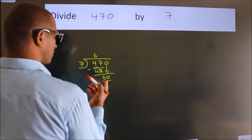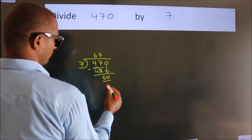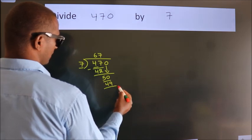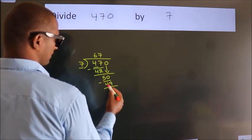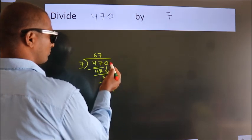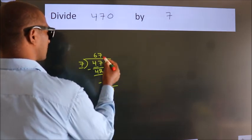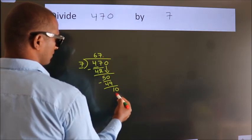A number close to 50 in the 7 table is 7 times 7, which is 49. Now we subtract. We get 1. After this, no more numbers to bring down. So what we do is put a decimal point and take 0. So 10.